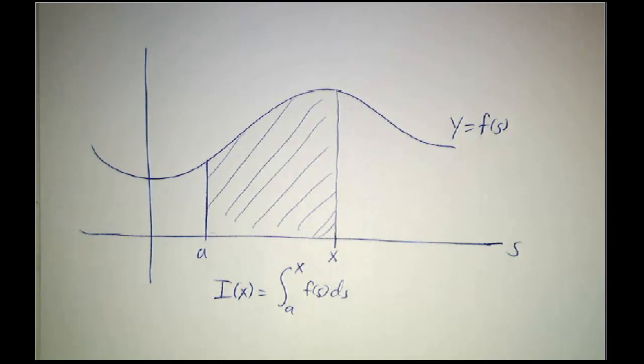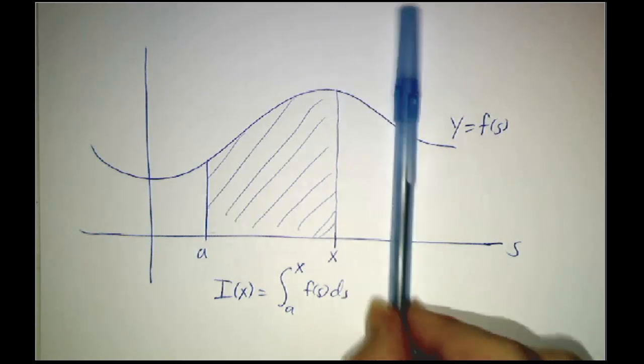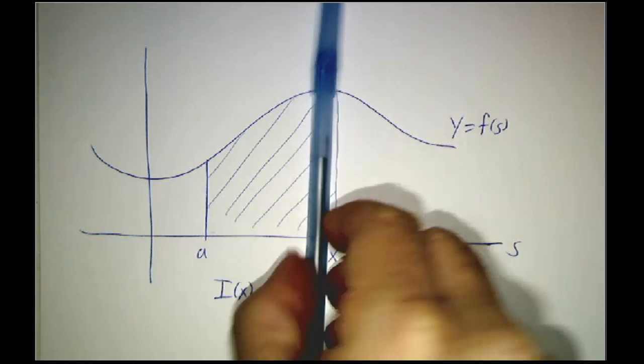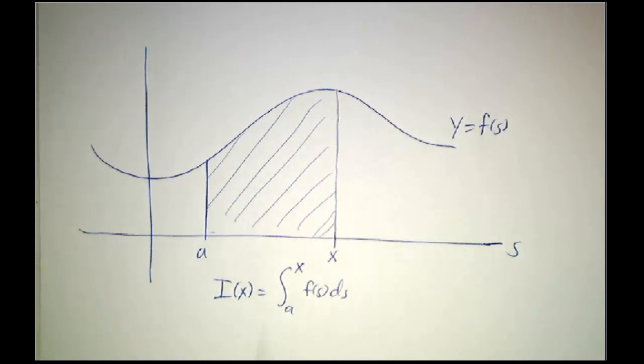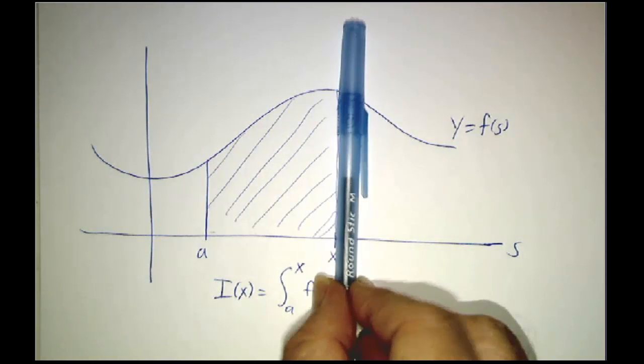If you change the value of that function, you make x a little bit bigger, you pick up some extra area. You pick up this region. If you make x smaller, you lose some area. So I of x is the total accumulated area as you sweep out starting from a until you get to x.